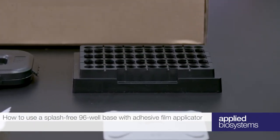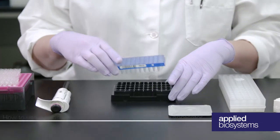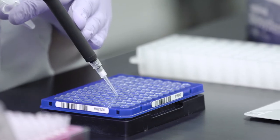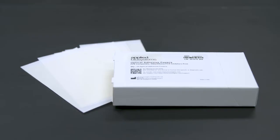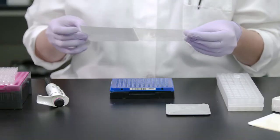To use the splash-free 96-well base with film applicator, first place your PCR reaction plate in the plate rack. After pipetting your PCR samples into each well, remove one of the adhesive plate seals from the package and remove the backing of the adhesive film.